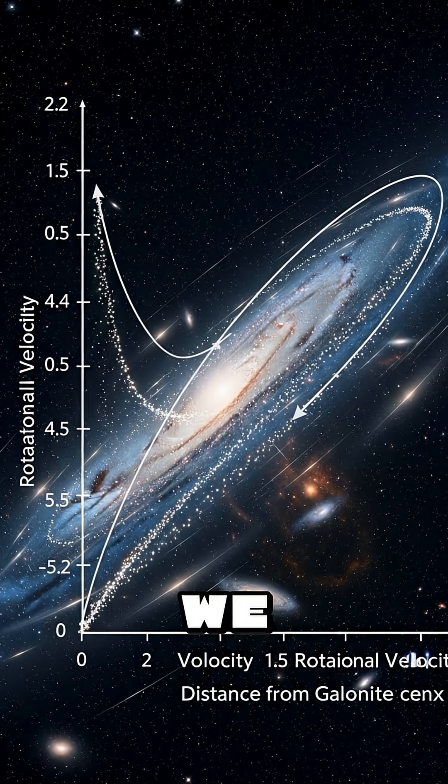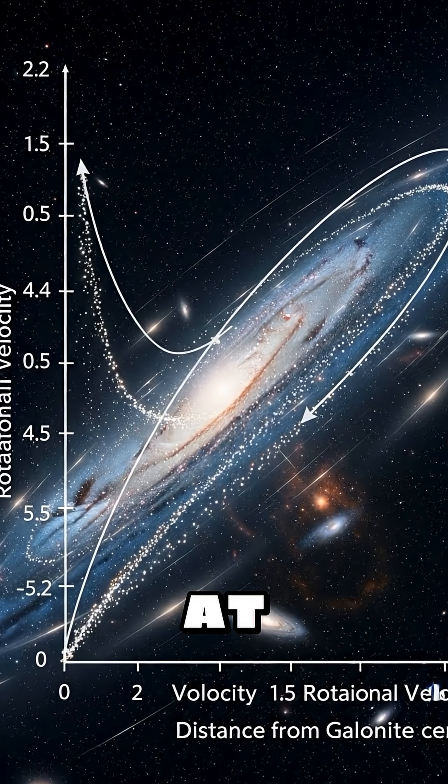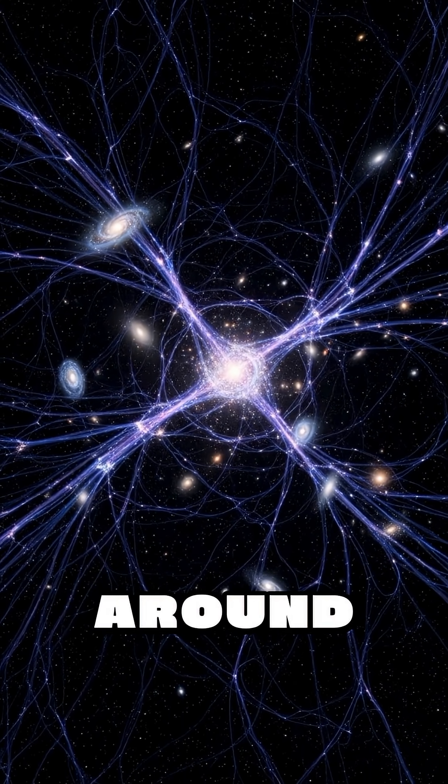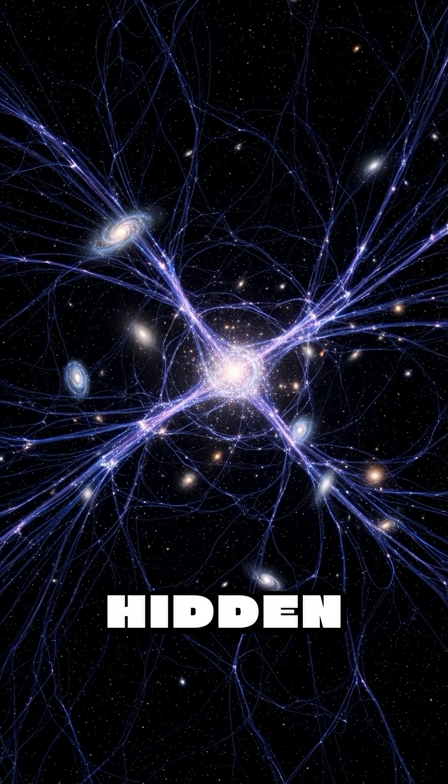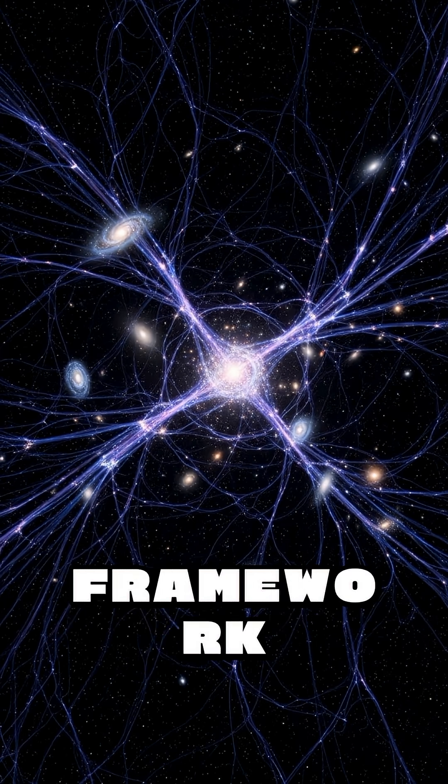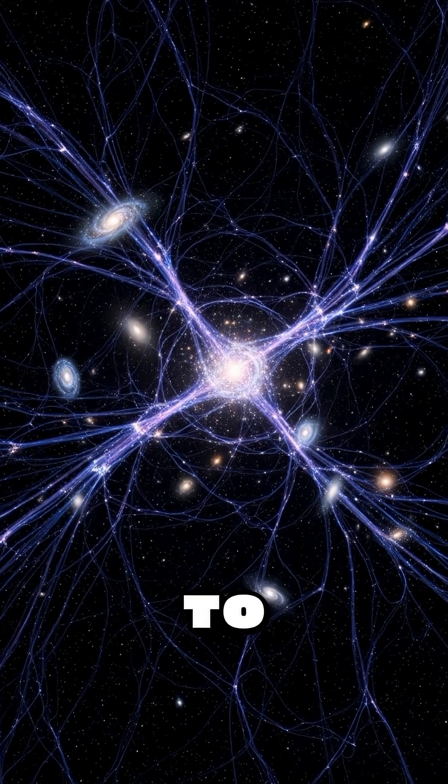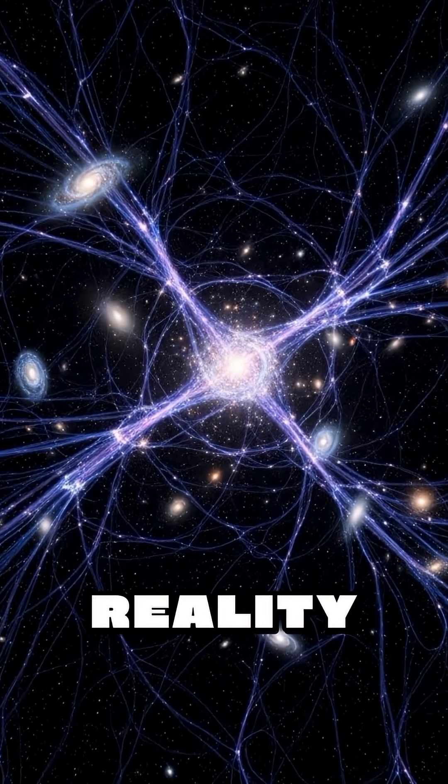We can't see it, we can't touch it, and it doesn't interact with light at all. But we know dark matter exists because we can see its gravitational effects on everything around it. It's the universe's hidden architecture, the invisible framework upon which all cosmic structures are built, and solving the dark matter mystery might be the key to understanding the true nature of reality itself.